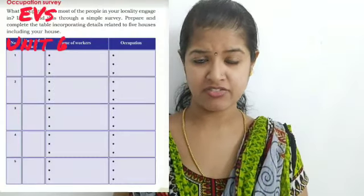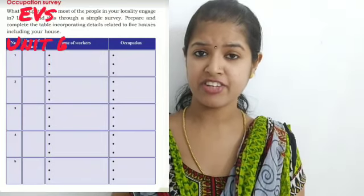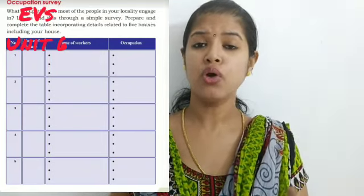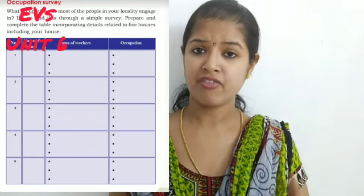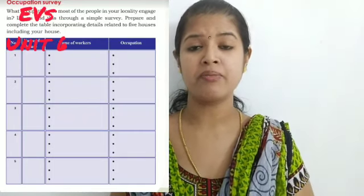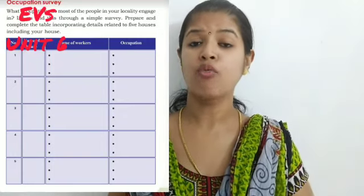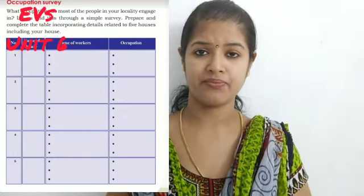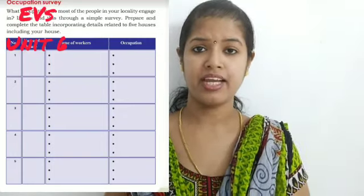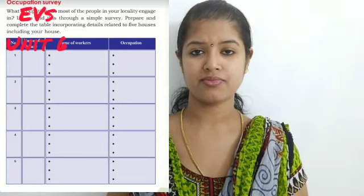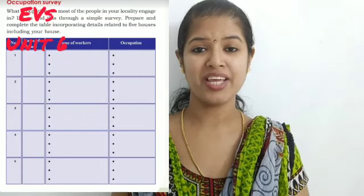In your textbook there is a heading 'Occupation Survey.' This is an activity for you, children. You have to find out from five houses the different workers. From one house there will be different members, and you can take a list of three workers and what they are doing — what is their occupation. Like that, from five houses you have to take the survey. Please do this activity.